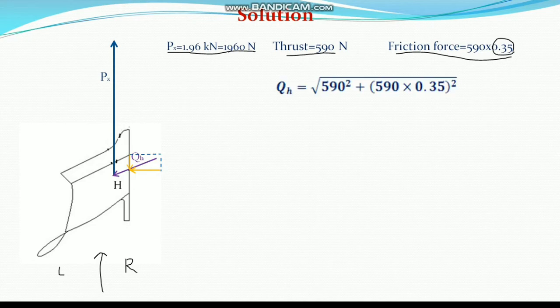Let us find out QH, the parasitic forces, which is the square root of 590 squared — the thrust — plus the frictional force (590 × 0.35) squared. You can find the amount is 625.09 N. So QH is calculated.